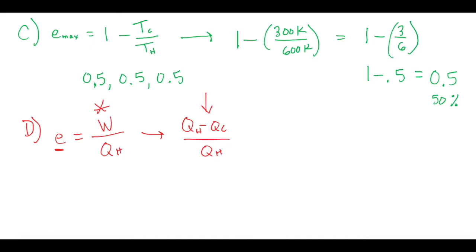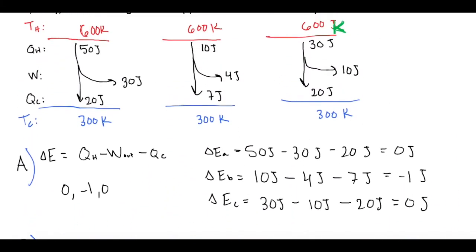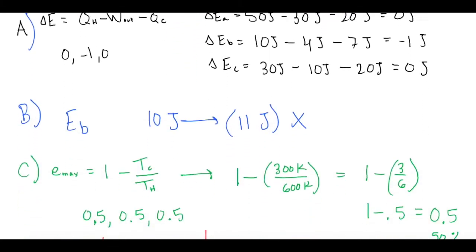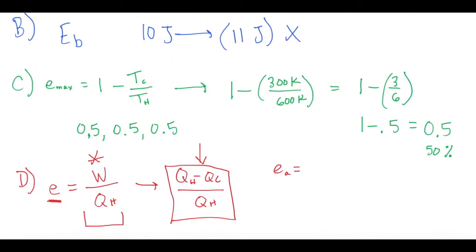If you use this equation, it'll tell you you're wrong. You'll be right in the sense that you did actually calculate the actual efficiency of the engine, but they want to know if any of them violate it, so we need to use this one. So for engine A, the efficiency for engine A is going to be work out, which is 30 and QH is 50. So we have 30 joules for work out over 50 joules for QH, which gives us 0.6 for that actual efficiency.